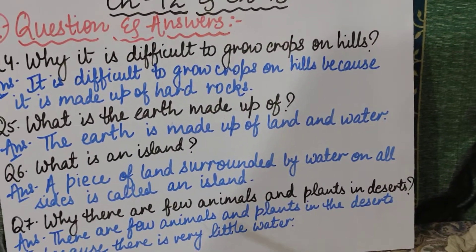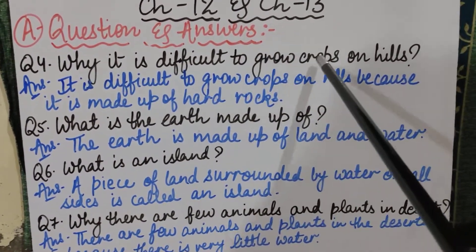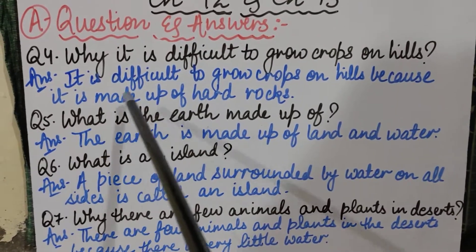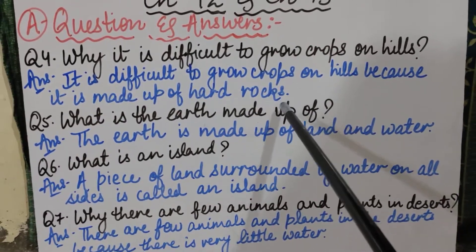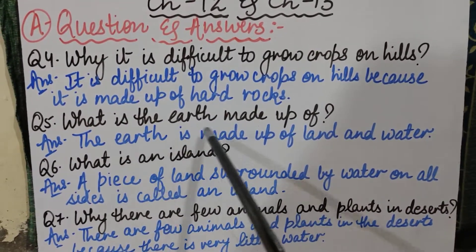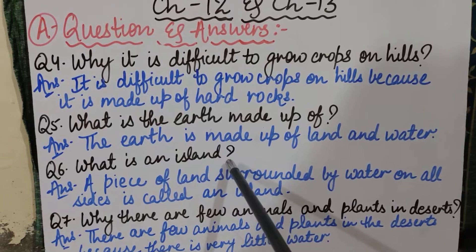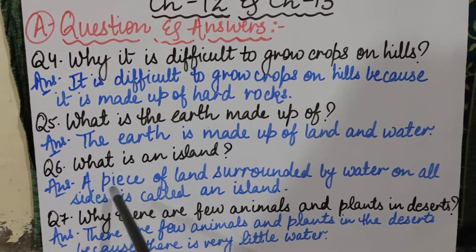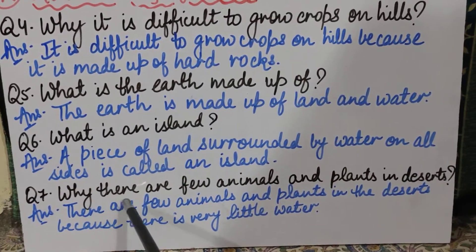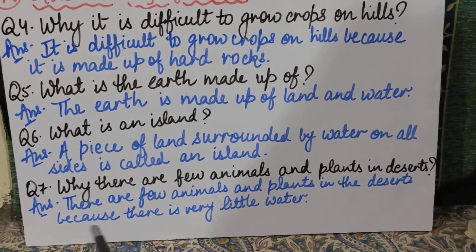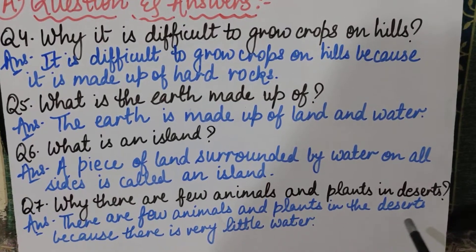I hope you all understood all seven question answers. Let me repeat questions four to seven. Question four: Why is it difficult to grow crops on hills? Answer: It is difficult because hills are made up of hard rocks. Question five: What is the earth made up of? Answer: The earth is made up of land and water. Question six: What is an island? Answer: A piece of land surrounded by water on all sides is called an island. Question seven: Why are there few animals and plants in deserts? Answer: Because there is very little water.